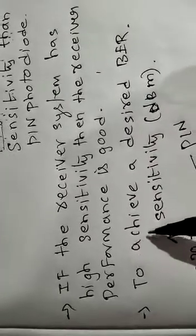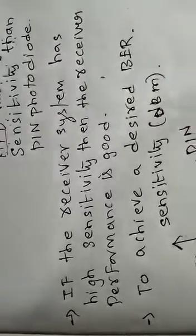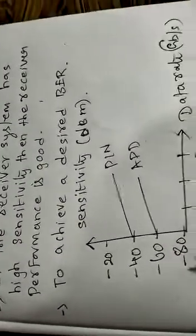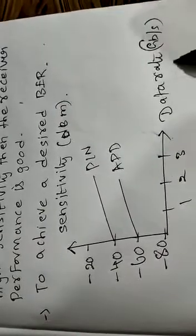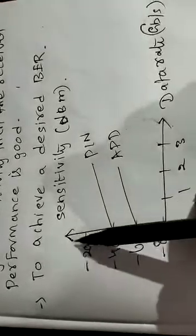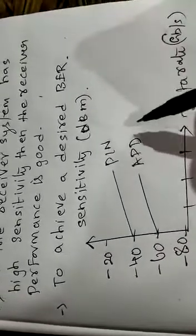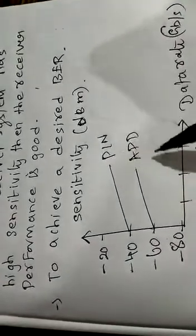...see the graph between sensitivity and data rate. So when data rate increases the sensitivity will become increases. In that case there are two cases of photodiode: one is PIN and as well as APD.